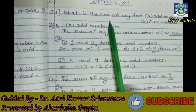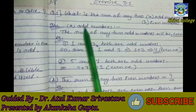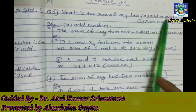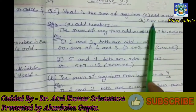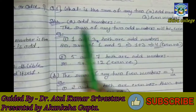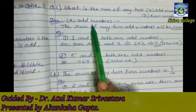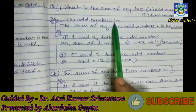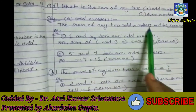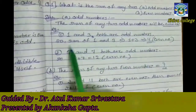We are going to start Exercise 3.2, Question 1. What is the sum of any two odd numbers? Solution of the first part: What is the sum of any two odd numbers? The sum of any two odd numbers will be even numbers. How to check?